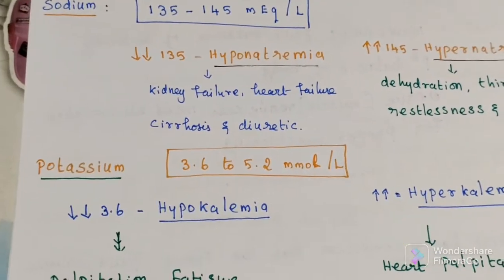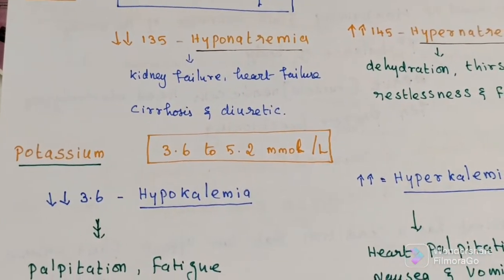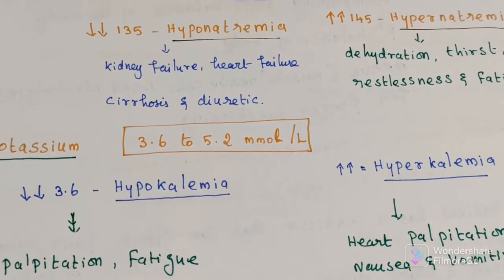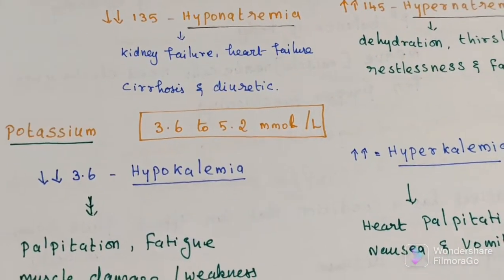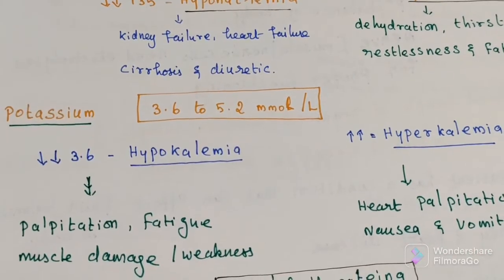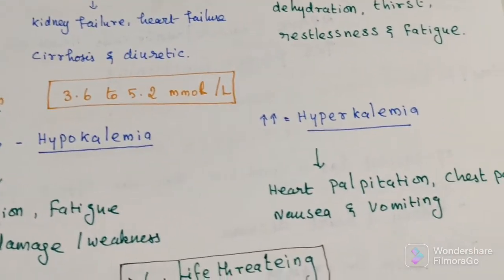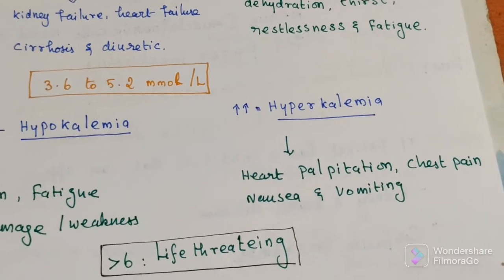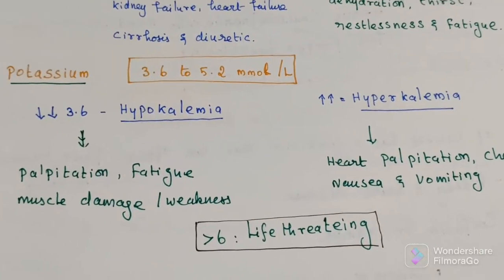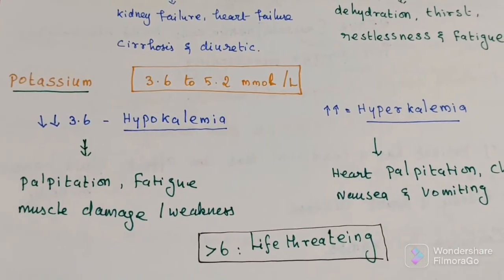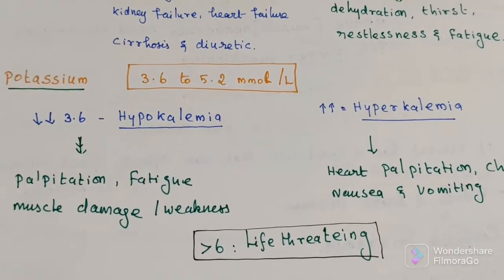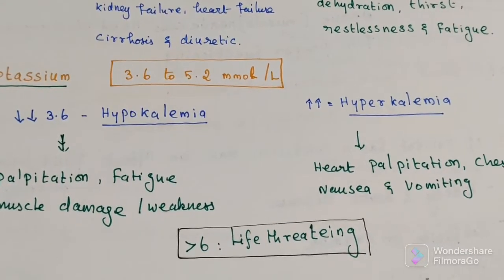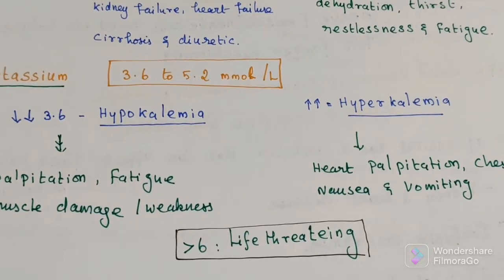The second electrolyte is potassium. The normal range is 3.6 to 5.2 millimoles per liter. A decreased condition is called hypokalemia; an increased condition is called hyperkalemia. If the potassium level increases above 6, this is a life-threatening condition and the patient must be immediately admitted to hospital for treatment.